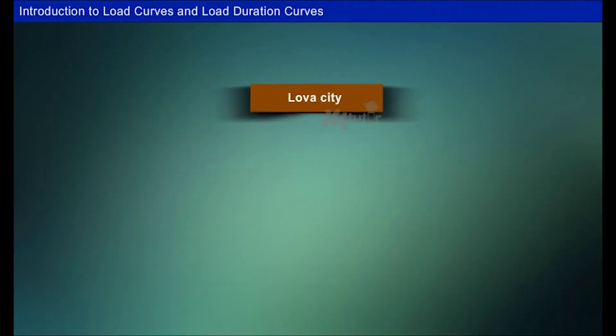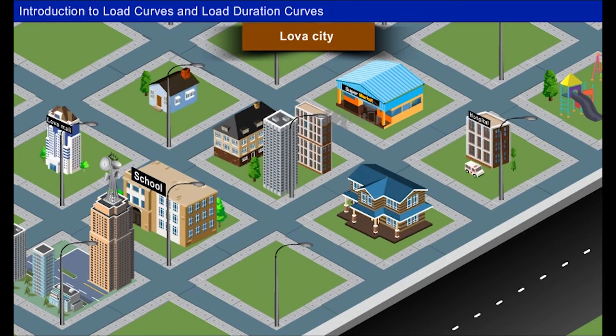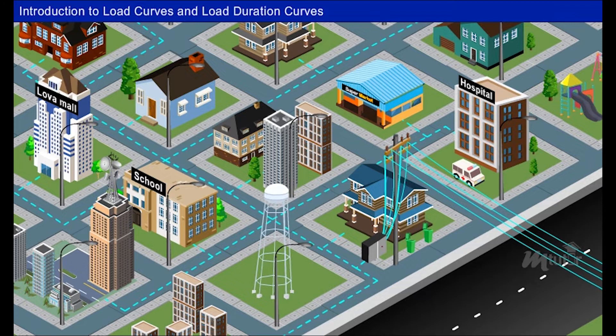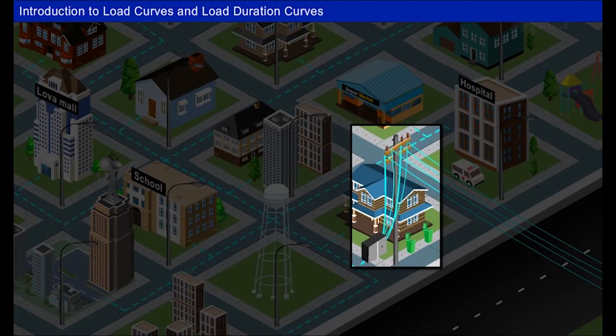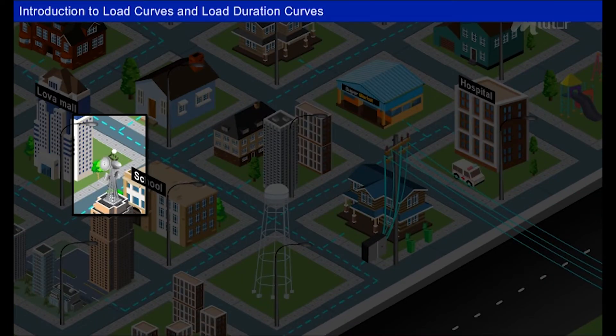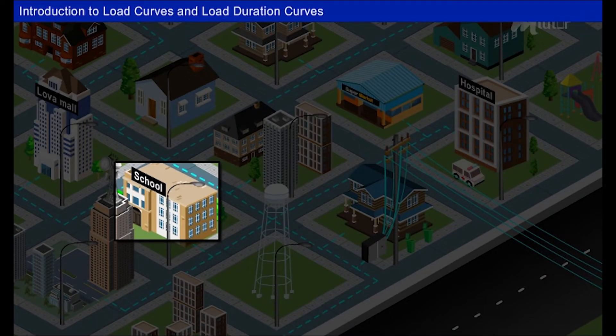Lovacity is considered to be built with strong and good infrastructure with a suitable environment. The core infrastructure elements of this city include 24 by 7 water and power supply, transport system and waste management system, reliable IT network, health care, education facilities, etc.